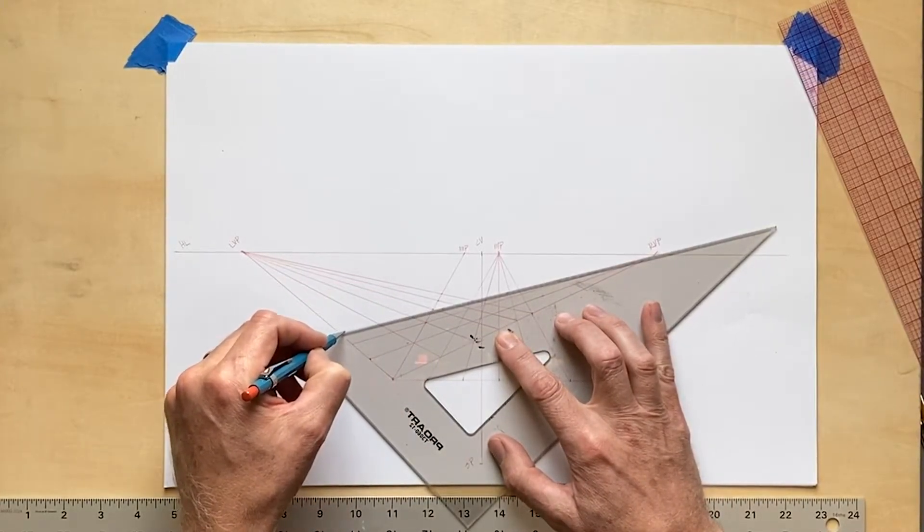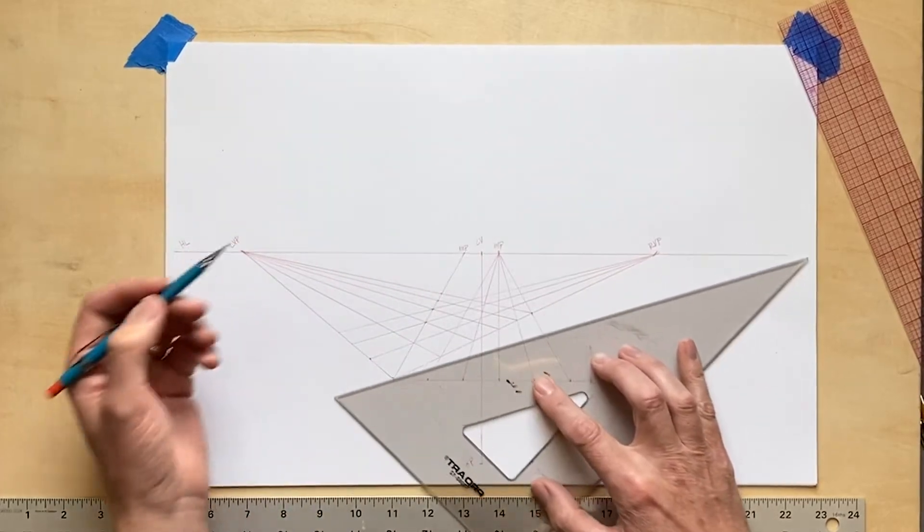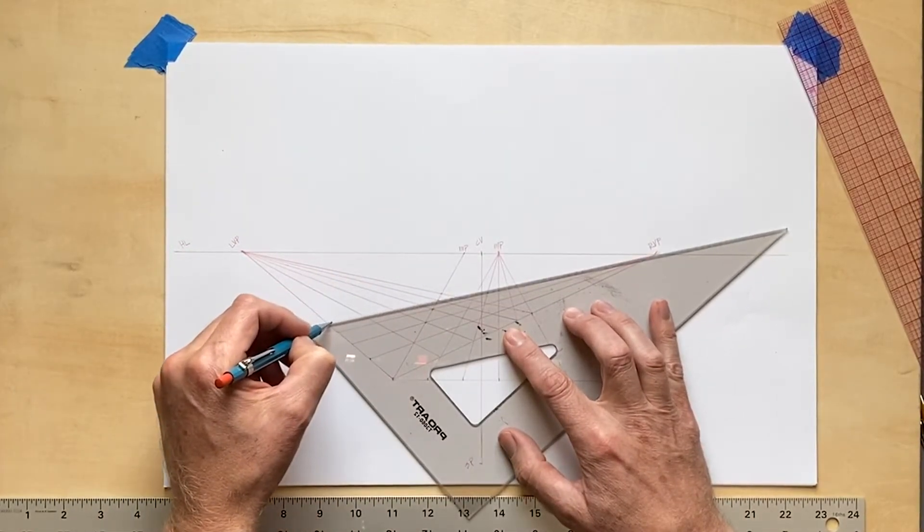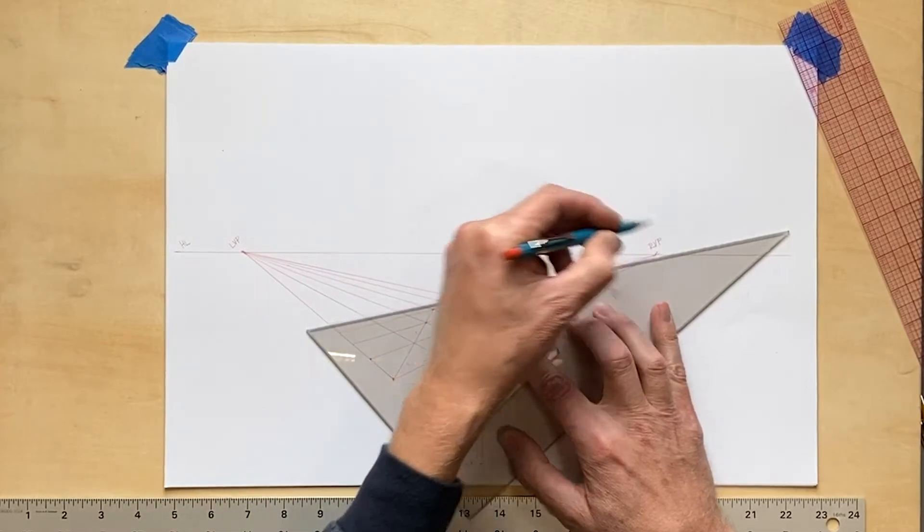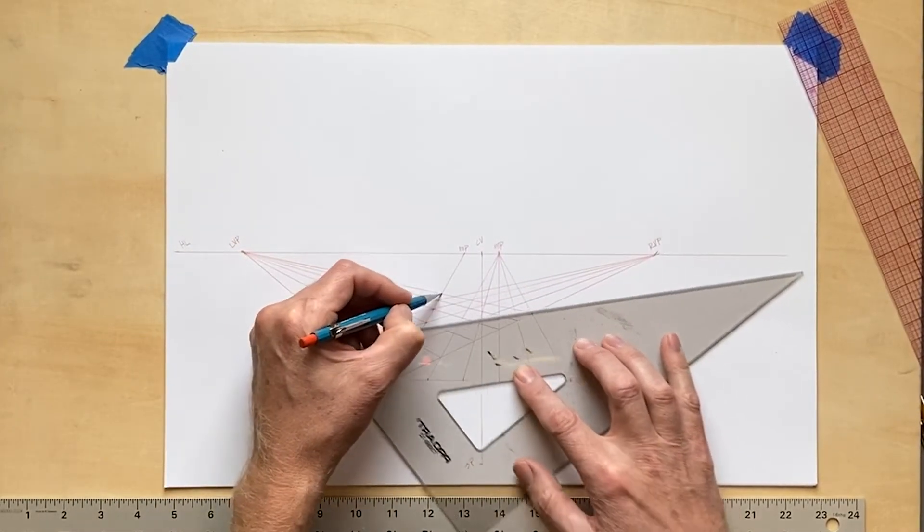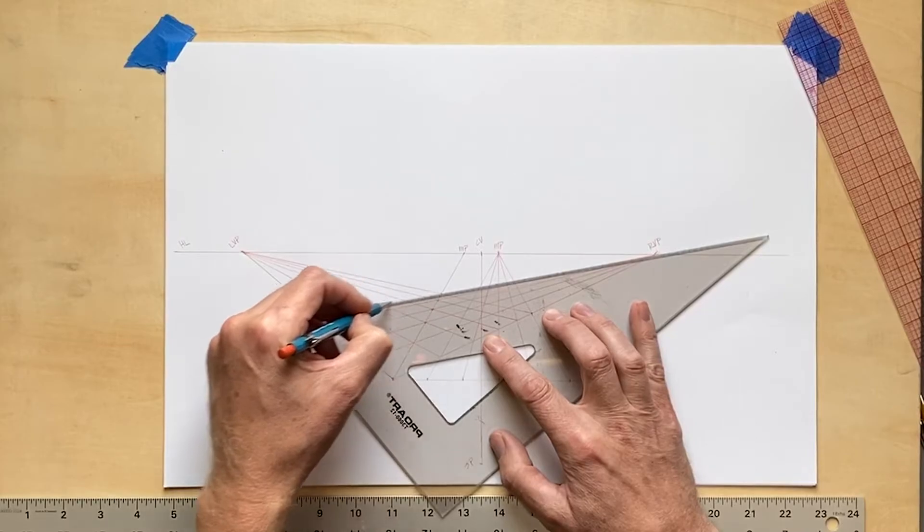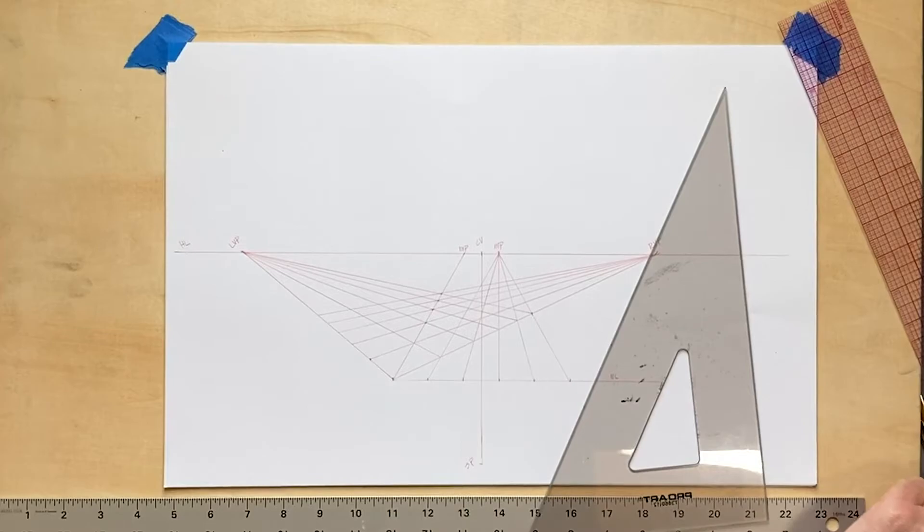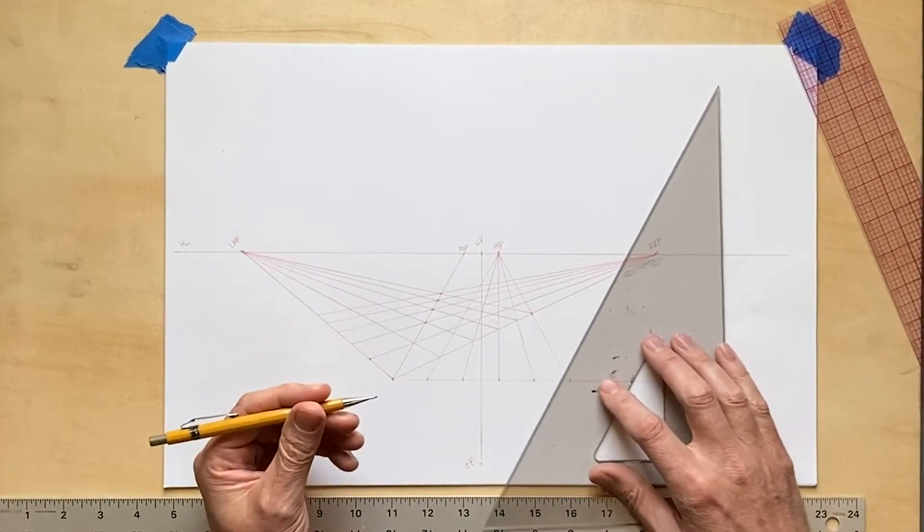Sometimes people stop and all I need to do is connect each of those. And I have a gridded space.